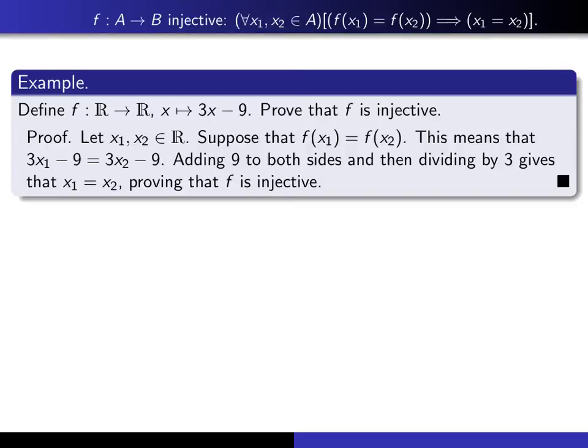So here's my proof. I'm just looking at this definition. I say, let X1 and X2 be elements of, in this case, the set of real numbers. And then we suppose our hypothesis is true. So suppose f(X1) equals f(X2). And then you'll fill in for this particular function. That means that 3X1 minus 9 equals 3X2 minus 9.